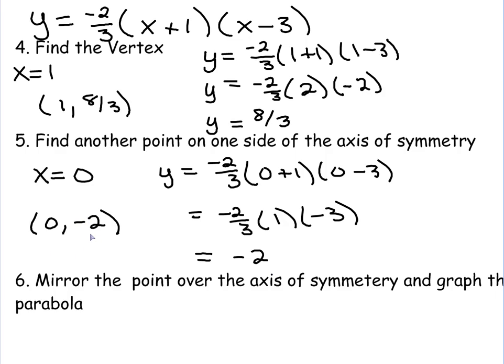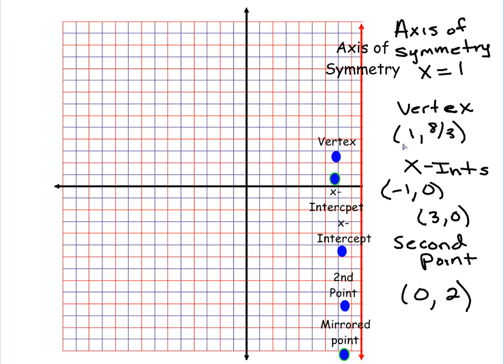Now we're going to graph this information. So the first thing I'm going to graph is my vertex. It's at one and then eight-thirds. So I'm going to go over one and then up eight-thirds. Eight-thirds is just about three, so I'm just going to put it at just about where three is. So it's going to be between two and the three. Next one I'm going to graph is my axis of symmetry. Put that right there.